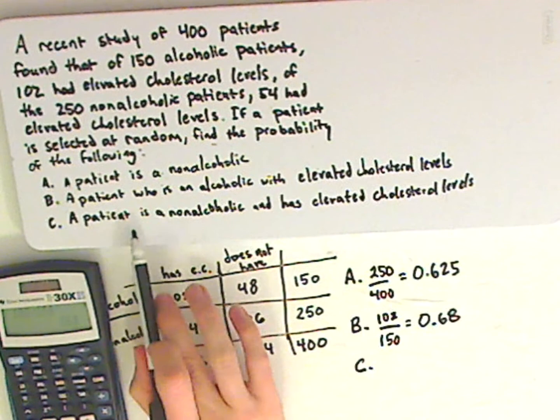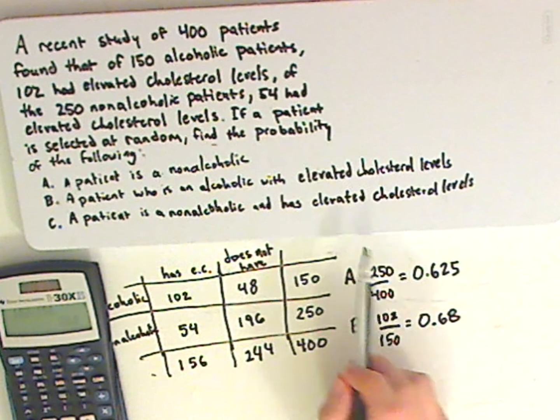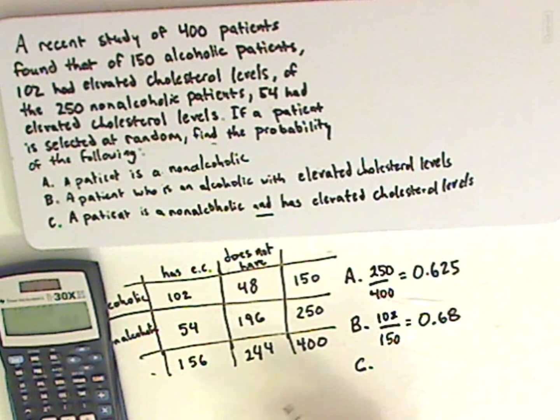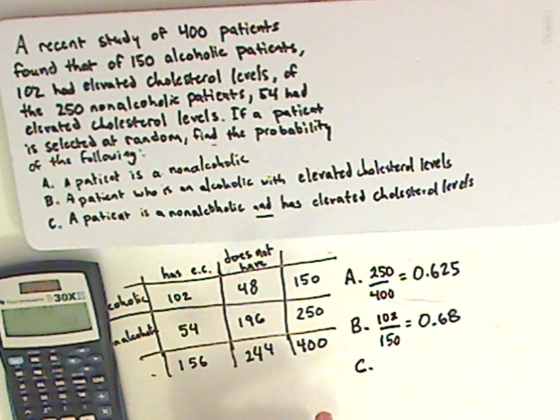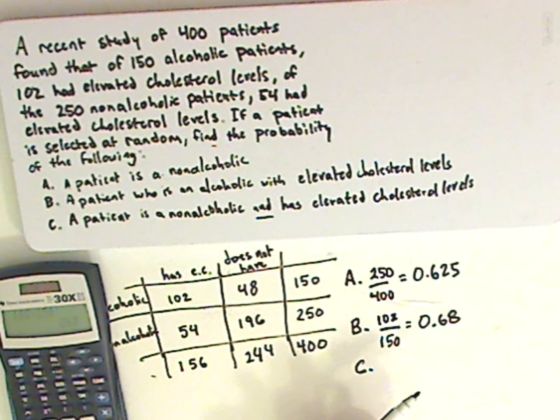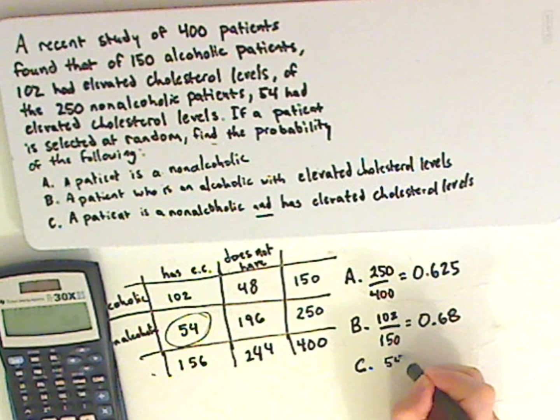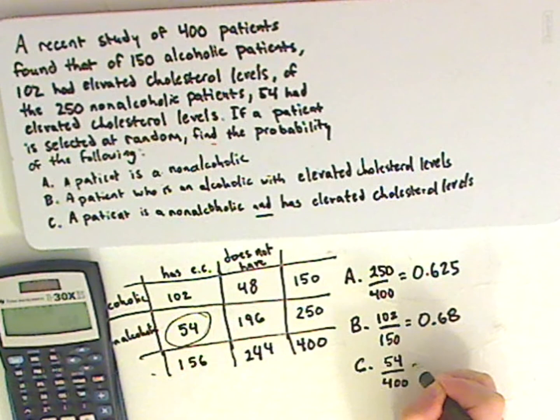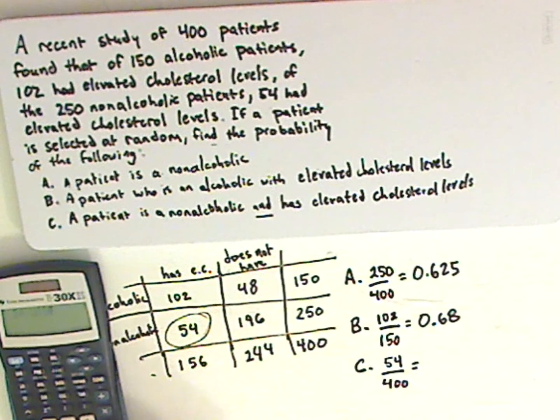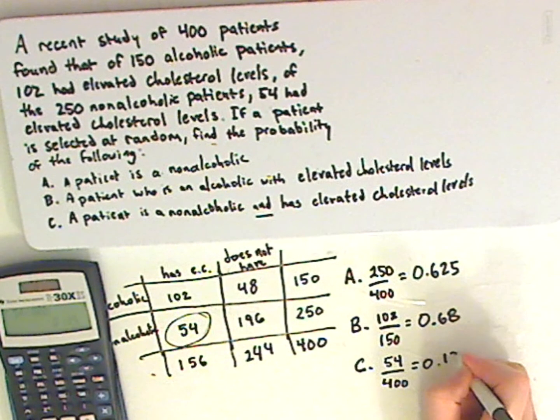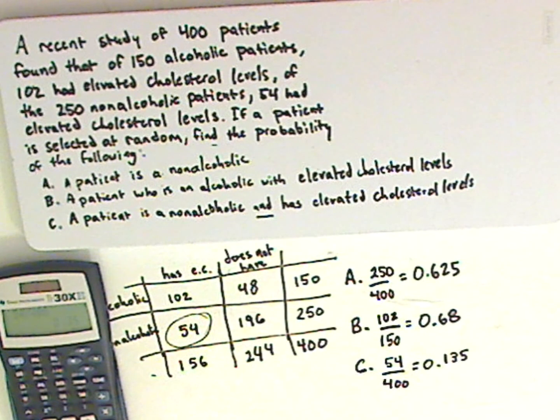Letter C. A patient is a non-alcoholic and has elevated cholesterol levels. Notice here it uses the word AND. So it's not given that it's a non-alcoholic patient. The patient is a non-alcoholic and has elevated cholesterol levels. So it would be this number right here, which is 54, and it would be out of 400. So let's see what that is. 54 divided by 400 gives me 0.135. That's it.